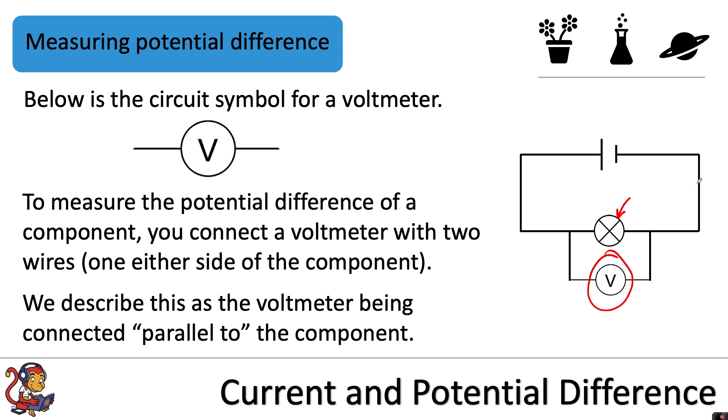We cannot put the voltmeter in the same loop as the component. That will not work. That's how we position the ammeter. But for a voltmeter you need to connect it with a wire either side.